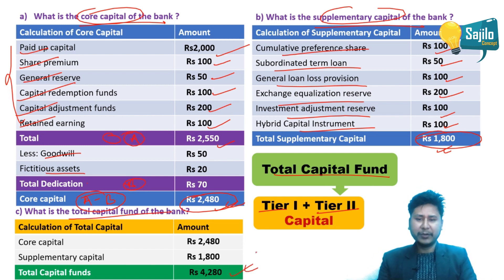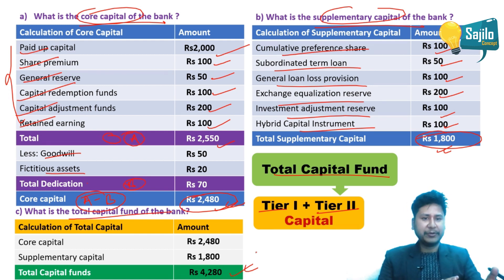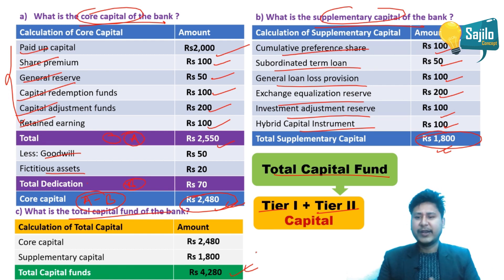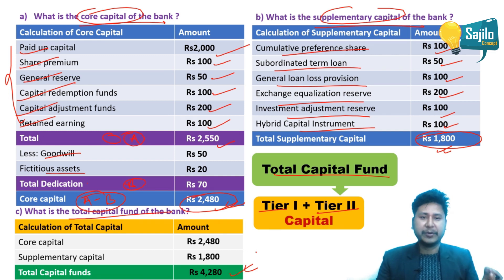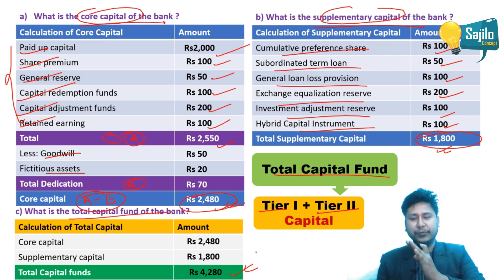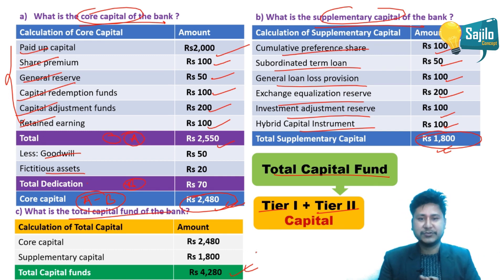To summarize: core capital (Tier 1) is 2,480; supplementary capital (Tier 2) is 1,800; therefore the total capital fund is 4,280.